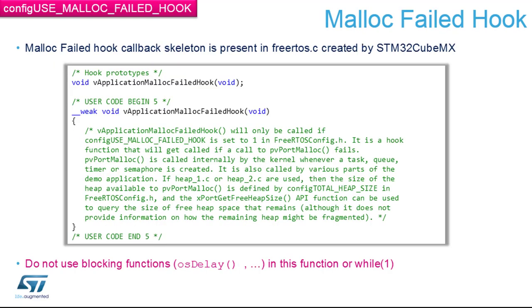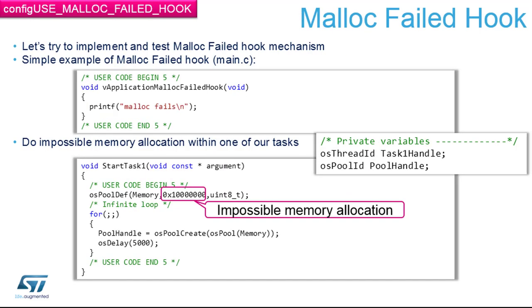It is activated by CubeMX with the use malloc failed hook macro, and it's generated in FreeRTOS.c with comments on how to use it. When you get there, it's most probably an unrecoverable state. If your application isn't dynamic enough to skip functionality relying on memory allocation, you can live with that, but otherwise it's better to log it and restart. As an example, if you try to allocate one megabyte, malloc will immediately fail because that cannot fit into a few kilobytes of microcontroller SRAM.